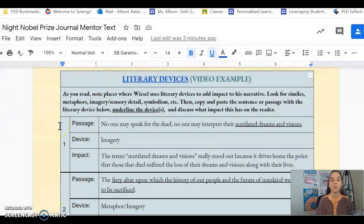So our directions here read, as you read, please note places where Wiesel uses literary devices to add impact to his narrative. Look for similes, metaphors, imagery, sensory detail, symbolism, etc. Then copy and paste the sentence or passage with the literary device below. Underline the device and discuss what impact it has on the reader.